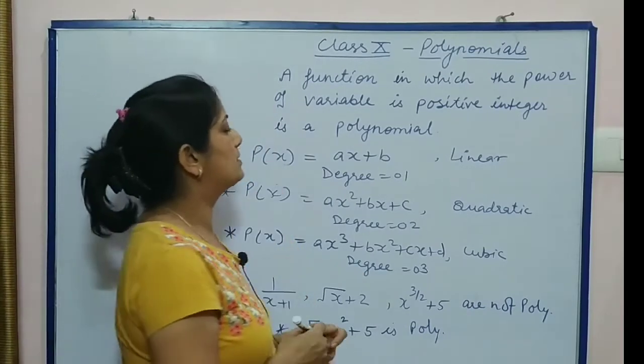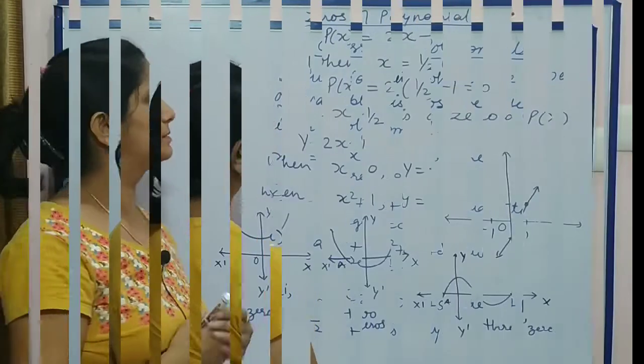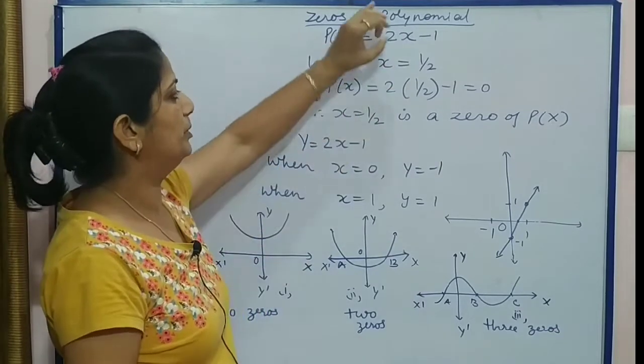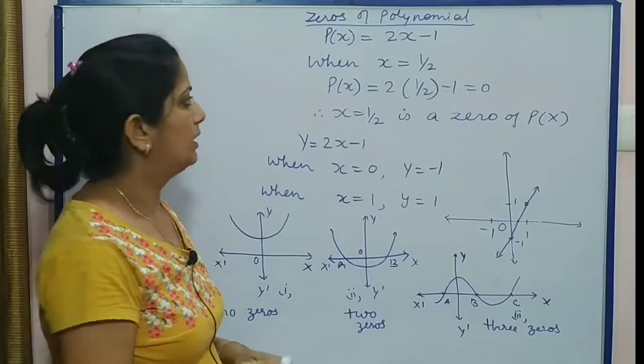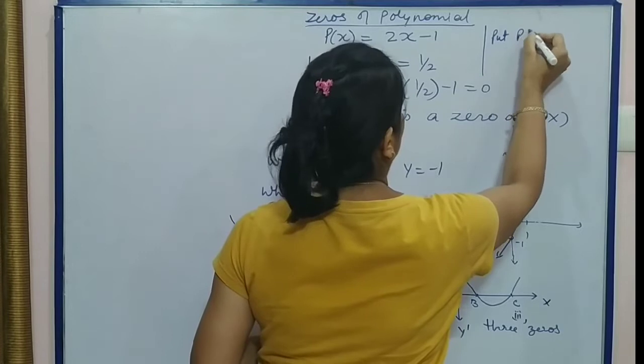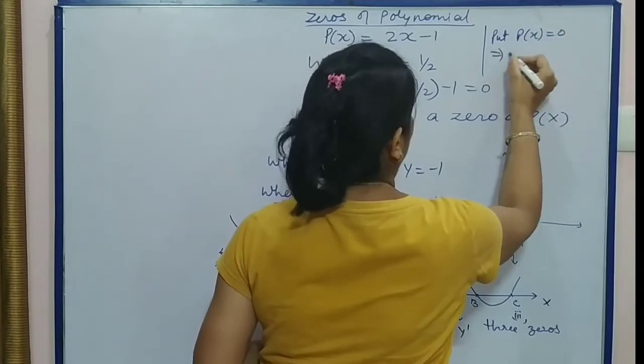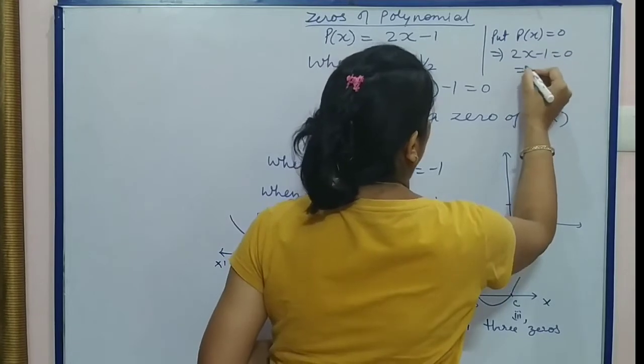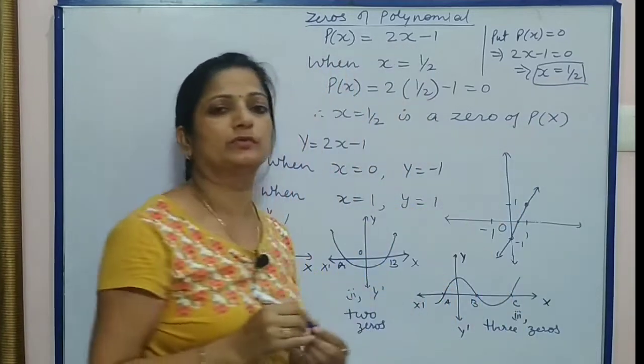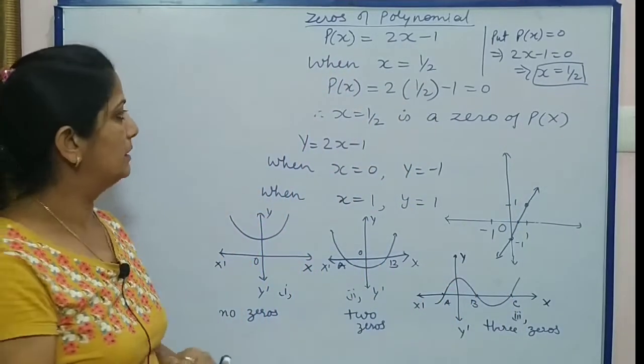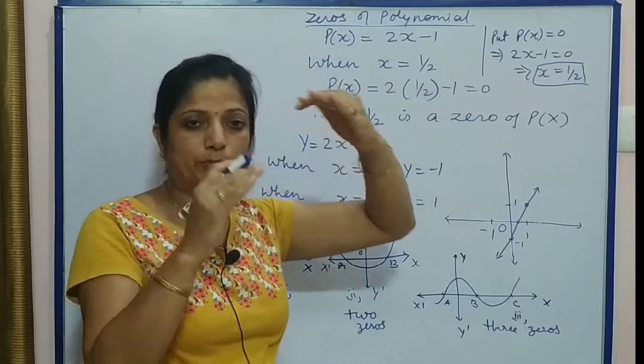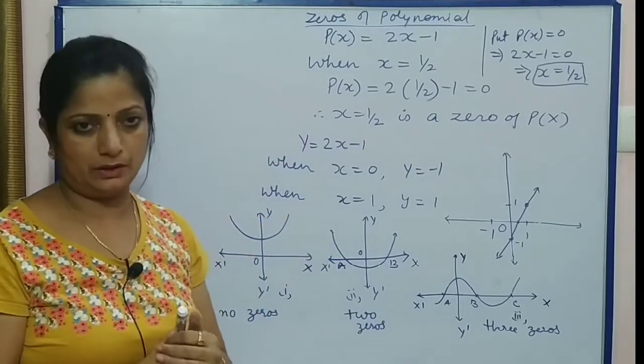Next topic is zeros of the polynomial. So sabse pehle zeros ka meaning kya hai? Suppose P(x) = 2x - 1. To find zeros of P(x), we have to put P(x) = 0.